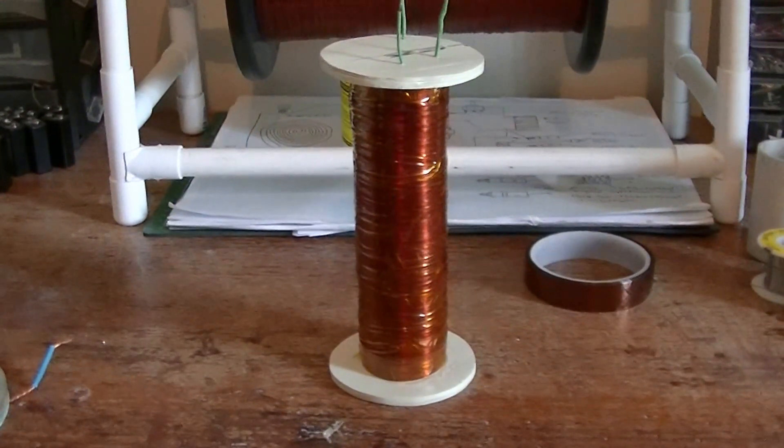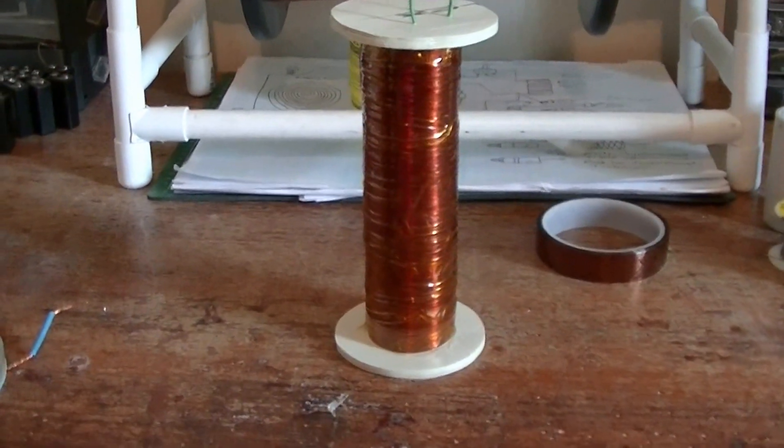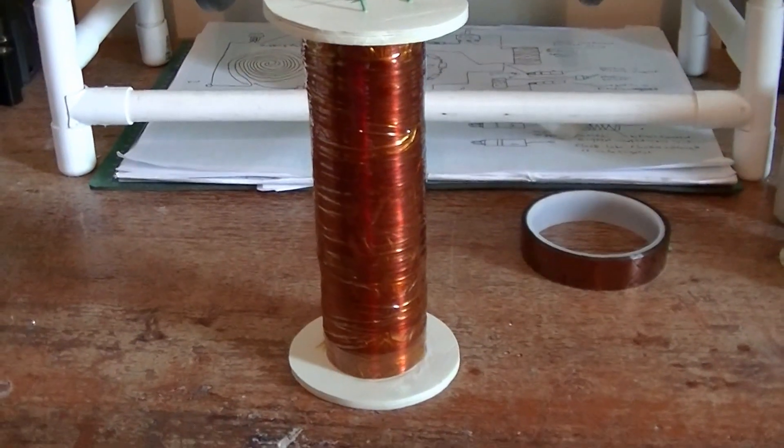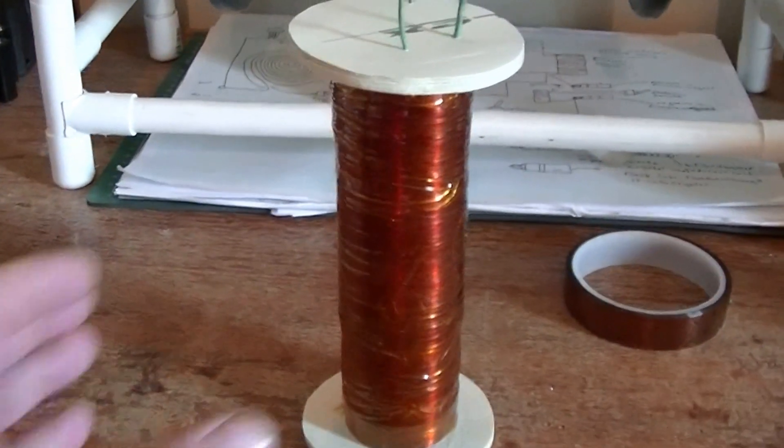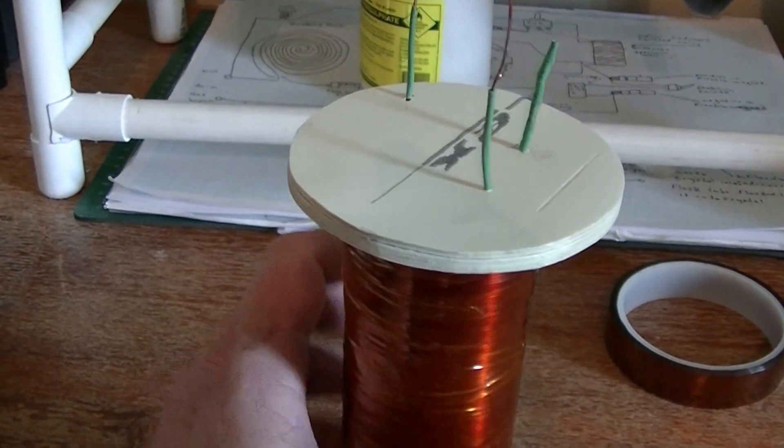Welcome back to my latest update. If you look carefully in front of you here, I have completed my seven-layer electromagnet for the hyperdimensional resonator. On the top here I've got the two wires coming out.